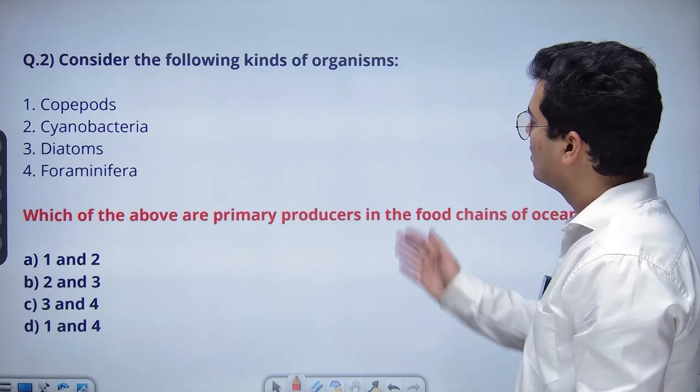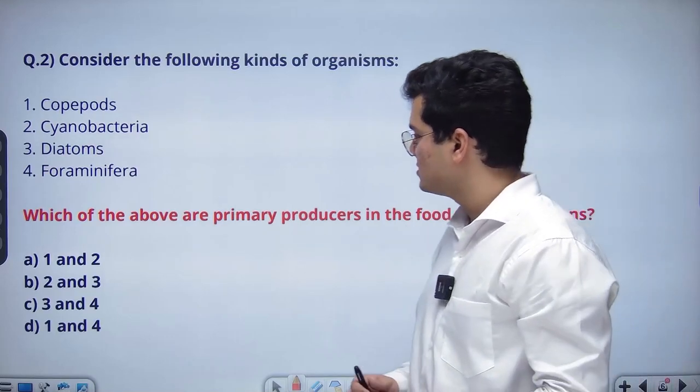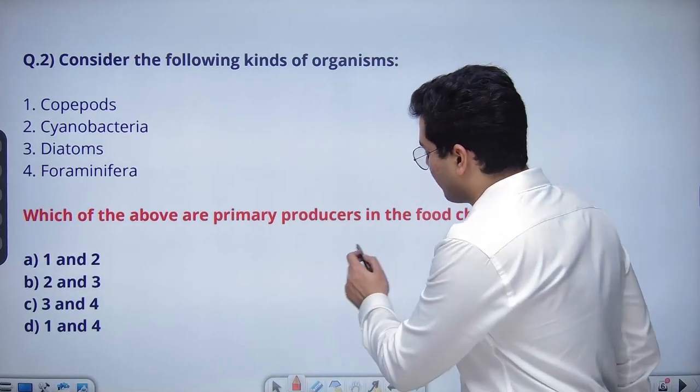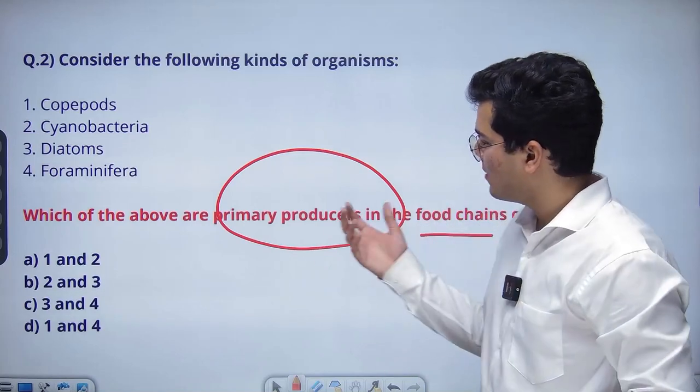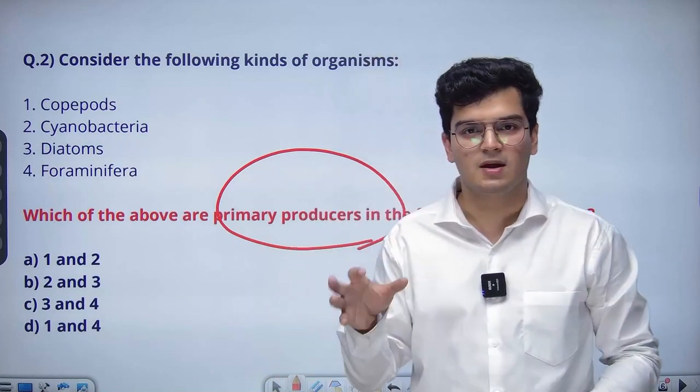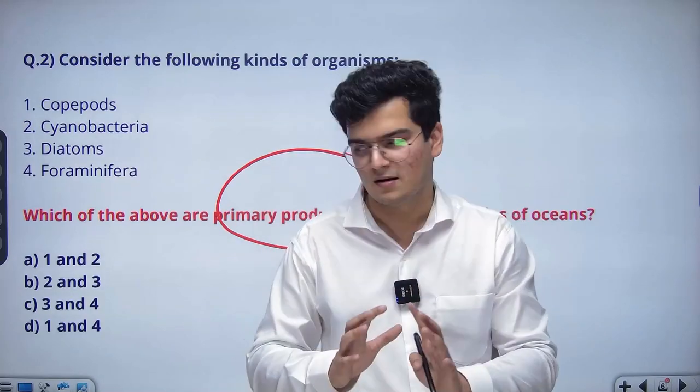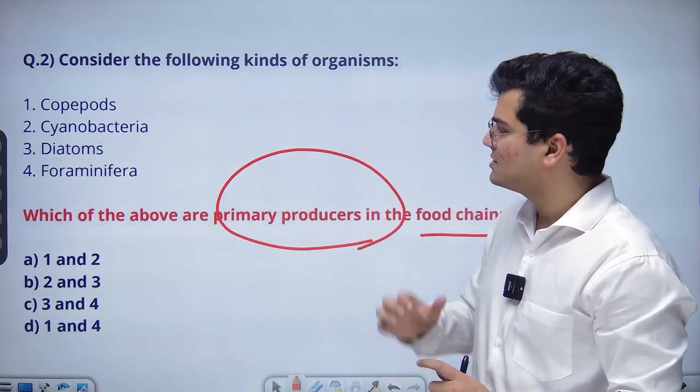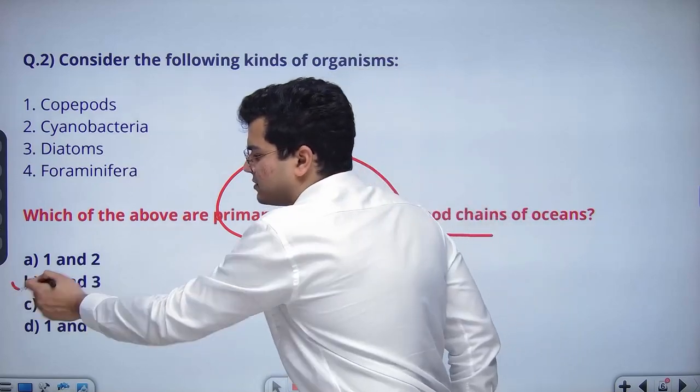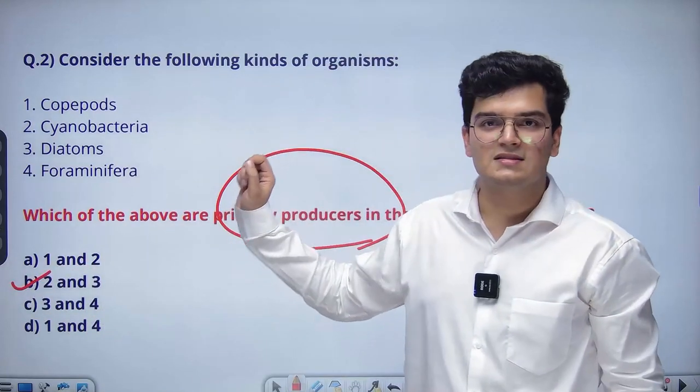Moving ahead. Consider the following kinds of organisms. Which of the following are primary producers in the food chain? In environment, the concept of primary producers is very important for you. You need to know what primary producers are. This question's lesson - the answer is 2 and 3, that's fine - but what is the lesson here?